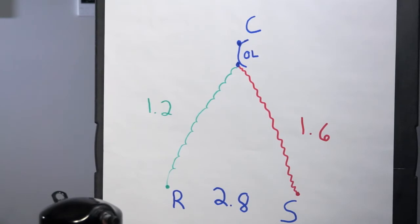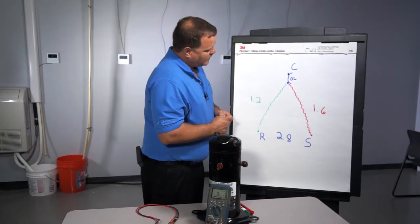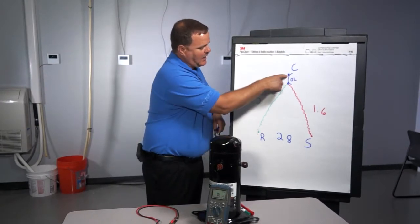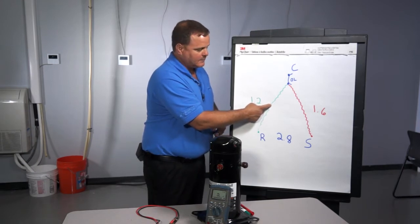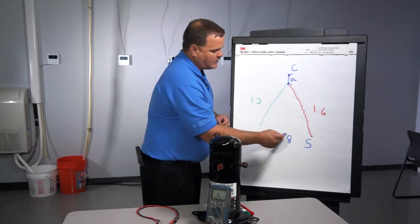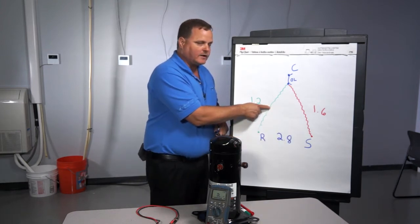So now if this compressor had an open winding, let's say it had an open run winding, then what would happen there is you would no longer get a reading between run and common because this winding here would be broke. And then you would no longer get a reading between run and start again because this winding would be broke.